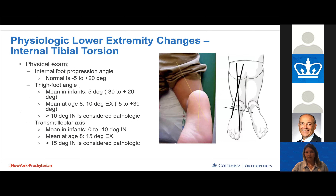On physical exam, you'll see an internal foot progression angle and in-toeing gait, as well as the thigh-foot angle measured prone. Mean in infants is about five degrees with a range of minus 30 to plus 20 degrees, increasing to a mean of 10 degrees external by age eight. More than 10 degrees of internal thigh-foot angle is considered pathologic. The transmalleolar axis with more than 15 degrees of internal rotation is also considered pathologic.